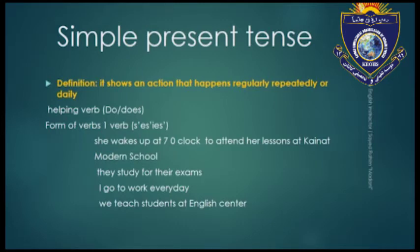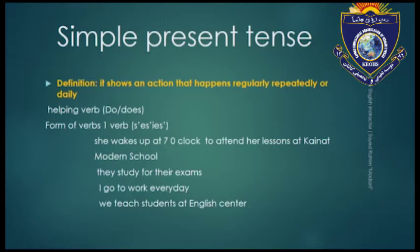We use the helping verb 'do' or 'does.' The form of the verb is the base form plus S, ES, or IES for the third person singular — we add S, ES, or IES to the verb. For example: she wakes up at 7 o'clock to attend her lessons at Kainaut Modern School. This action is happening repeatedly, regularly, every day.